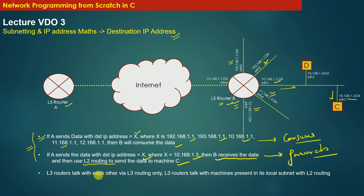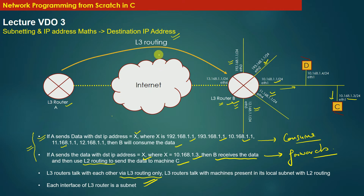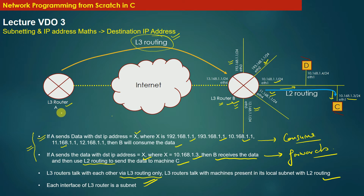L3 routers talk with each other via L3 routing only, whereas L3 routers talk with machines present in their local subnet using L2 routing. In our example, if router A sends data with destination IP address 10.168.1.3, the data will reach gateway router B using L3 routing, because the destination machine C is present in one of the local subnets of router B.